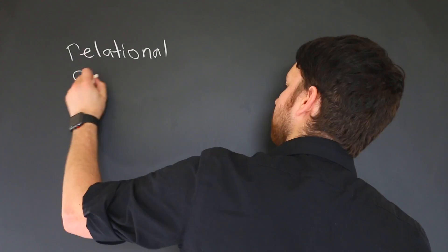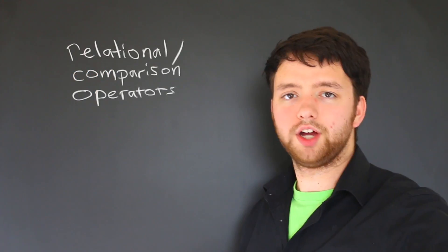Well, to do that we need to have these operators: less than, greater than, equal to. These are known as relational operators, and in C you may also hear them as comparison operators.